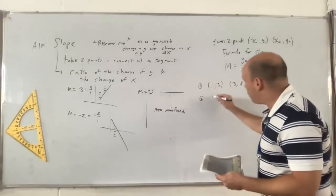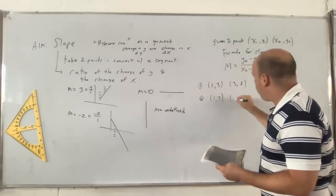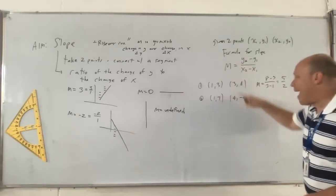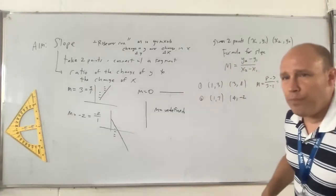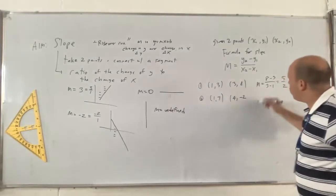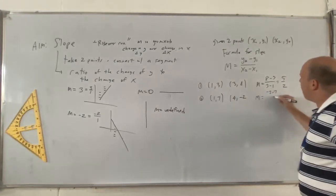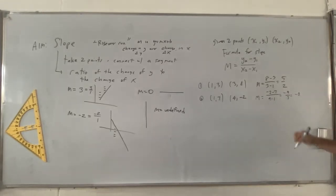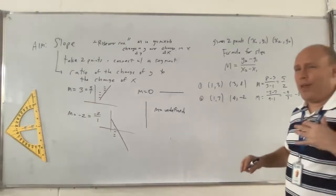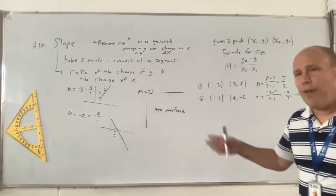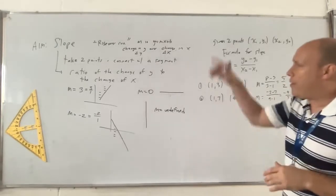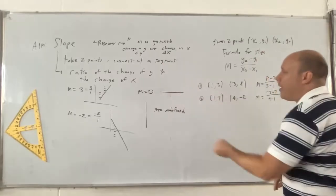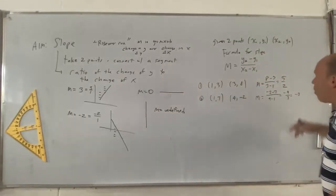How about the points (1, 7) and (4, -2)? We see x is going from 1 to 4, but y is going from 7 down to negative 2 — it's going to be a negative slope. The slope equals negative 2 minus 7 over 4 minus 1, which is negative 9 over 3, which is negative 3. In the last class I mentioned that, like in statistics, we have qualitative and quantitative — we do the same with slope: increasing or decreasing is qualitative, but the actual number is quantitative.